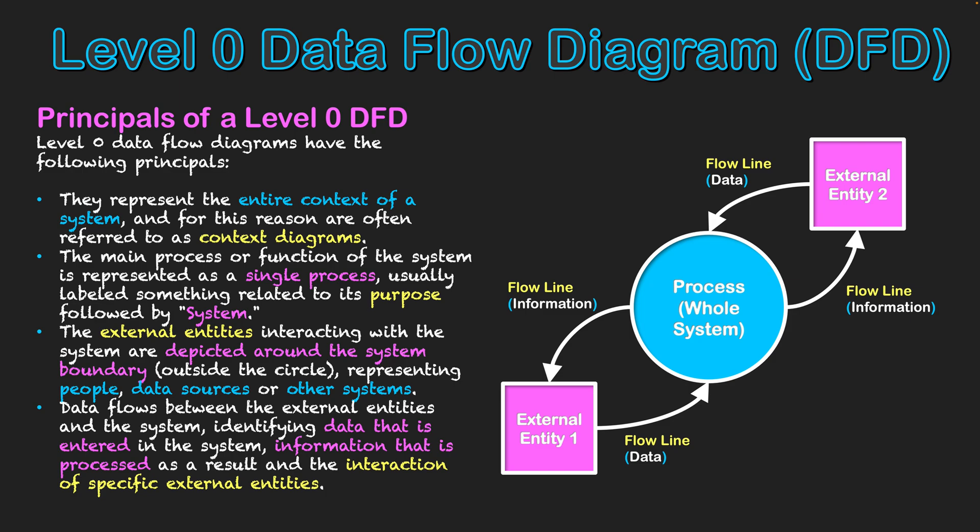As said with these arrows, they illustrate with text what the data is. And in many cases, what's going into the system from these external entities is data, and what's coming out of the system back to those external entities is information, because we're hoping that the system has processed it into something meaningful for these different external entities.